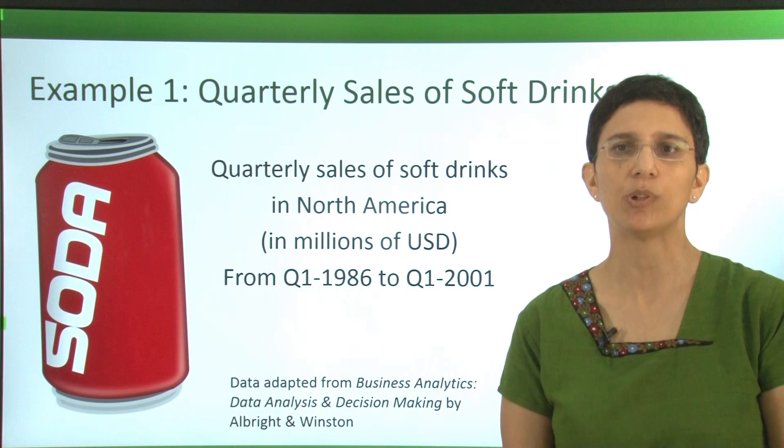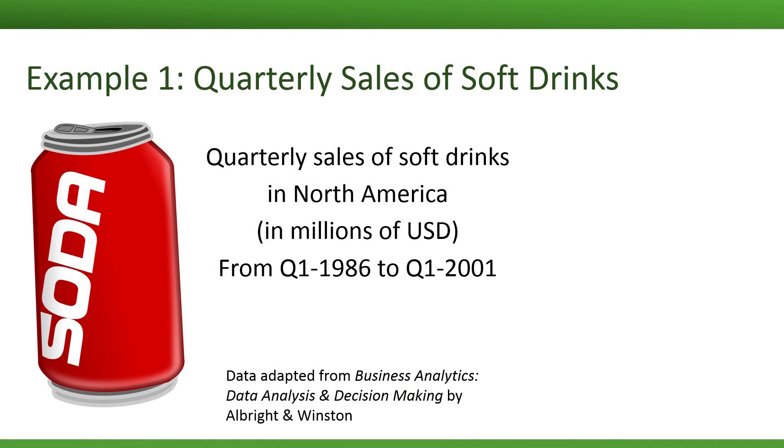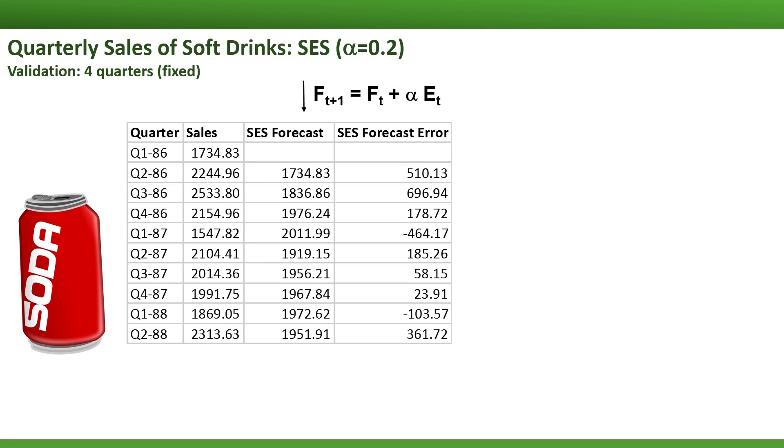Let's return to our example of sales of soft drinks in order to see how the simple exponential smoother works. Remember that we have quarterly sales of soft drinks over a pretty long period. And now we're going to apply the simple exponential smoothing. Using the formula F sub t plus 1 is F_t plus alpha times the error E sub t, we need the forecast and the forecast error from the previous period in order to compute the next forecast. Let's use alpha equals 0.2 for illustration. We therefore start with a second period in the data, quarter 2 of 1986.